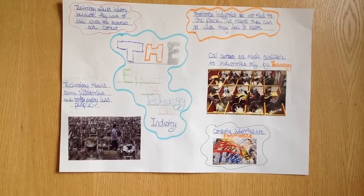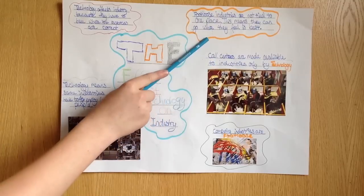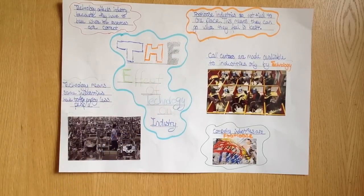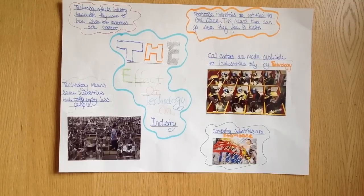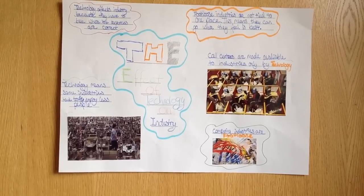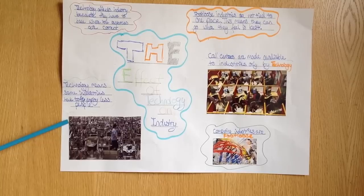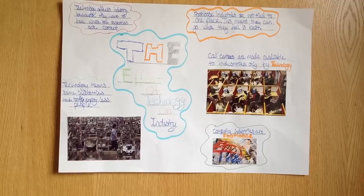This revision clip is about what effect technology has had on the location of industries. Technology has had a larger effect on industry more and more recently. Some industries are called footloose industries — this means they can go where they like. For example, computing industries. Technology means industries can move where they want to. Core centres are set up where technology is easily accessible and cheap, for example in India. However, this means they have to base themselves where technology is easily accessible. Technology affects industry because machines can now do so much of the work needed in today's society, reducing the need to employ people. The internet is also a core part of affecting industry, especially in the research category.